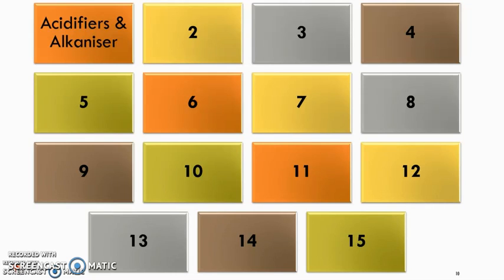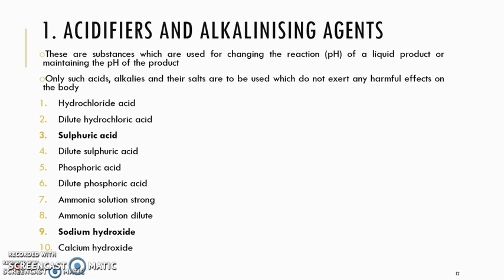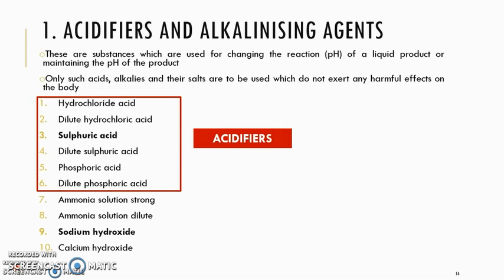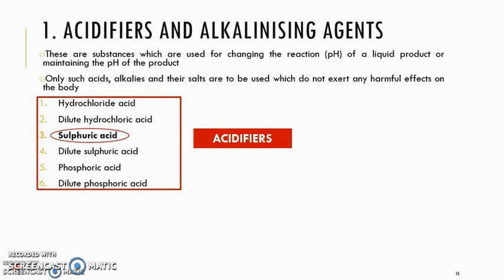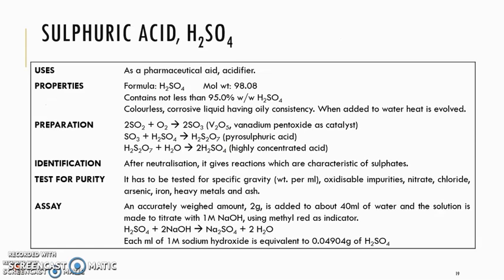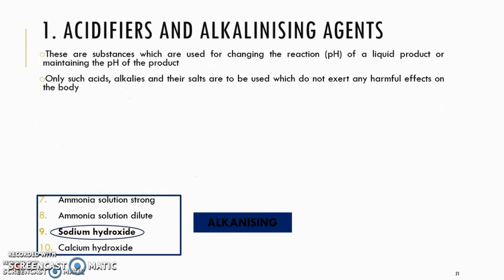The first one is acidifiers and alkalinizers. These substances are used to alter the pH of a product or to manually maintain the pH of the product. Therefore, they cannot cause any harmful effects on the body. There are 10 types of these substances: 6 are acidifiers and the rest are alkalinizing agents. We will look at one monograph from each category. The first is sulfuric acid, which is an acidifier, and the second is sodium hydroxide, which is an alkalinizing agent.